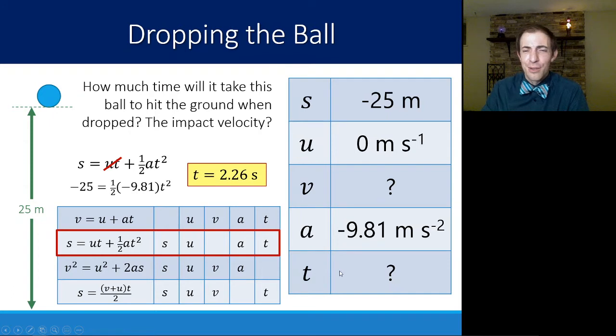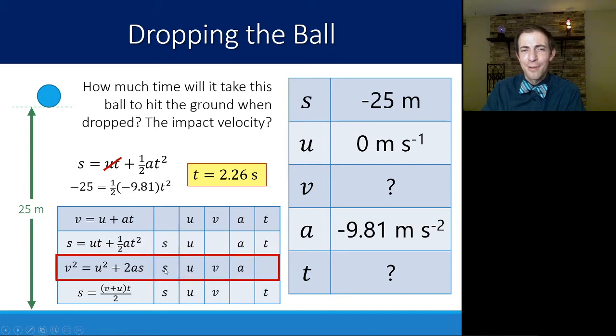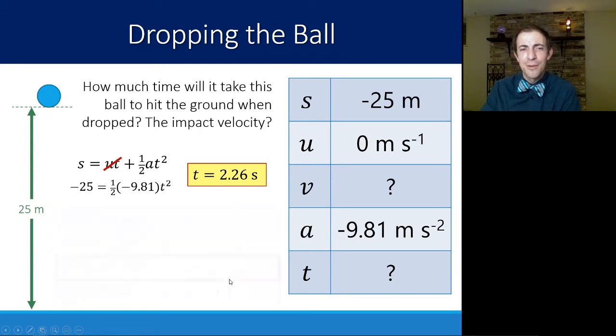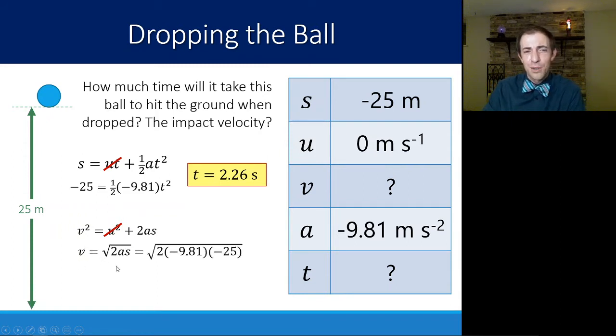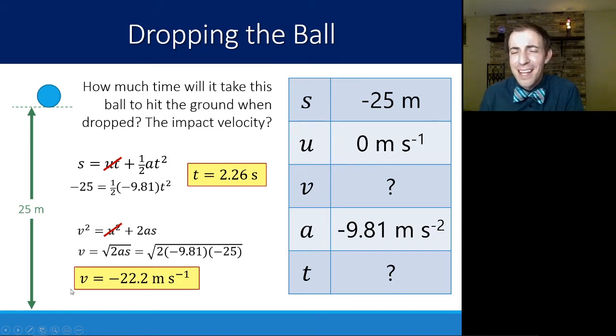In this case, I'm just going to use the one that doesn't use time. So I'm not basing it off of another answer. So let's go ahead and use this third equation to solve for the impact velocity. V squared is equal to U squared plus 2AS. In this case, I can simplify this as well because U is going to be zero. U squared is going to be zero. That cancels out. So we end up with V is equal to the square root of 2AS. Just to get V by itself, I square root everything. I have a negative 9.81 times a negative 25, so I'll end up with a positive. No errors there. And I end up with a 22.2 meters per second, but it's downward, so I'm going to call that a negative 22.2.